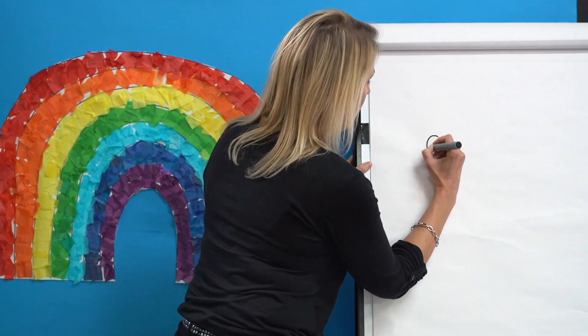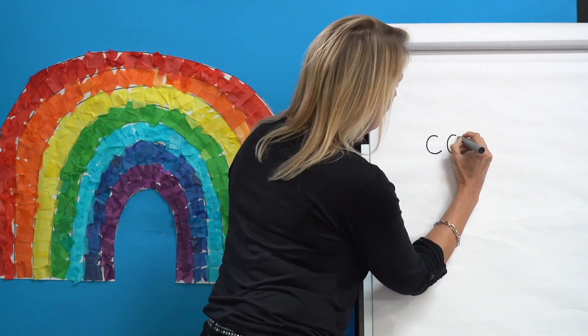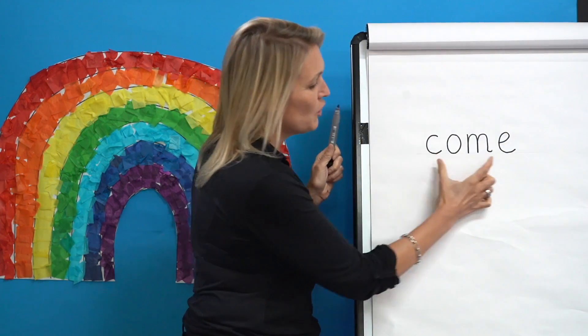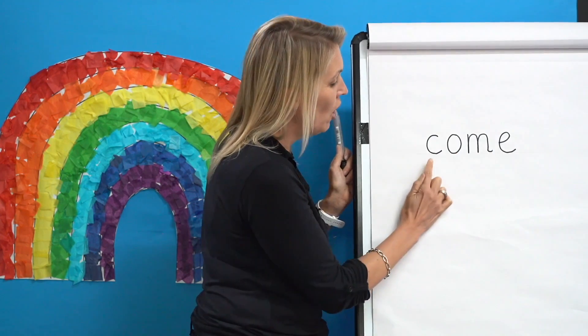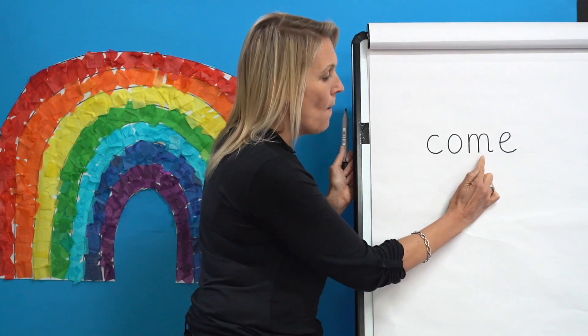Now let's try and spell some tricky words. Let's write the word 'come'. Segment the sounds with me: Come. C-U-M. Let's count how many sounds we need: C-U-M — that's three sounds. Watch me write 'come'. Can you remember the tricky bit? First bit's easy: C. The next bit is the tricky bit — do you remember? The O and the E work together to make the sound 'a'. So we've got C-U-M: Come. Let's do that again: C-U-M. Come.